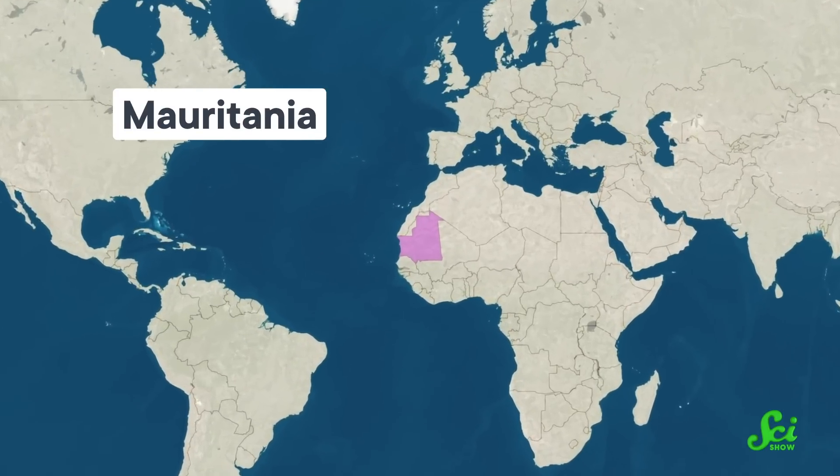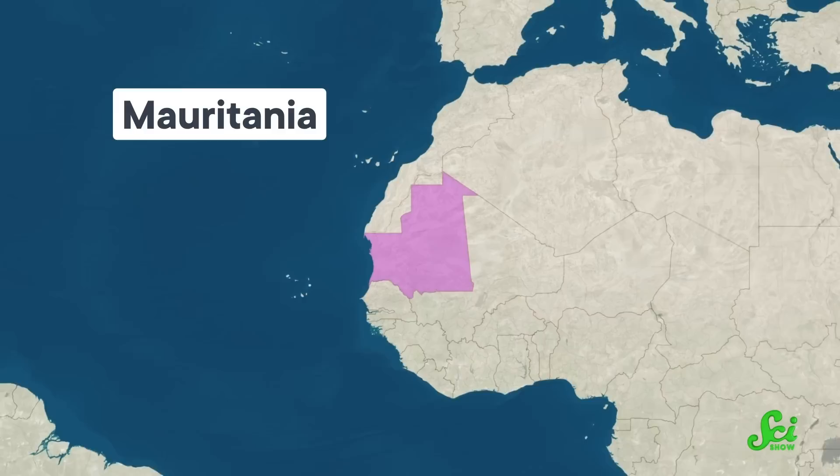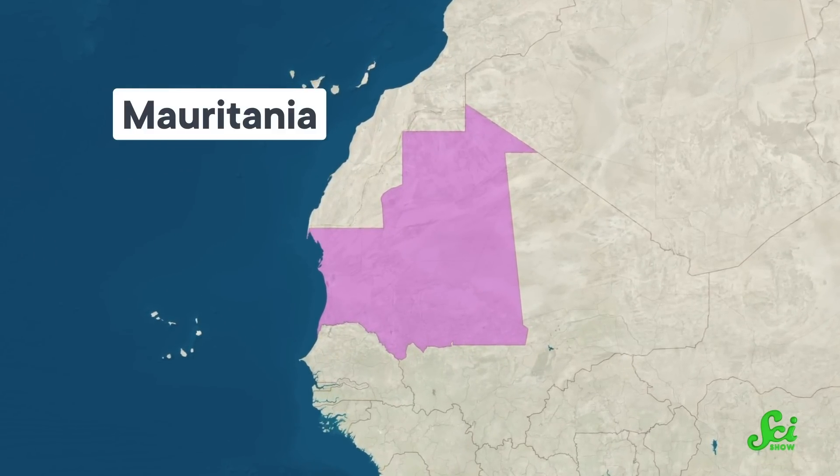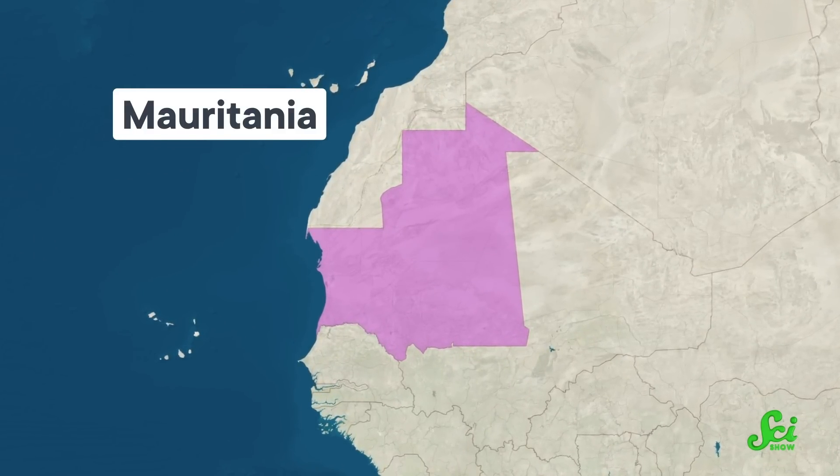To get to the bottom of this, they studied the remains of a landslide that happened nearly 150,000 years ago off the coast of Mauritania. To find the weak layer, they compared two datasets that gave them a glimpse at the sediments piled under this part of the ocean floor.